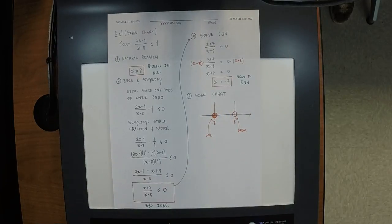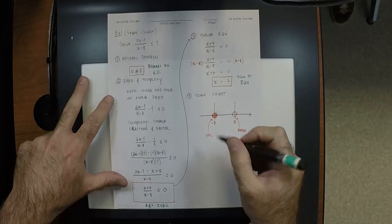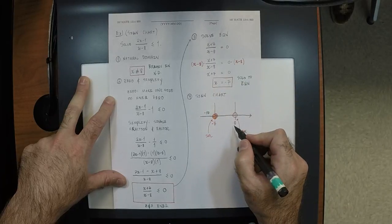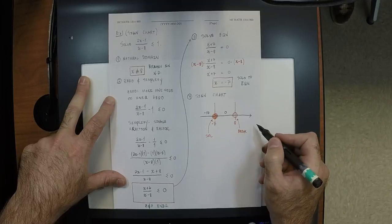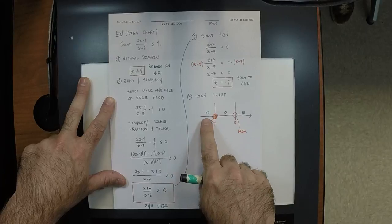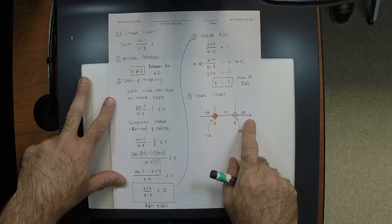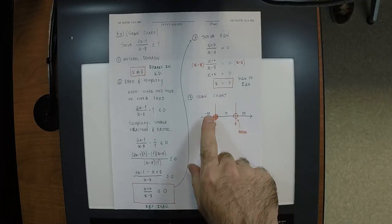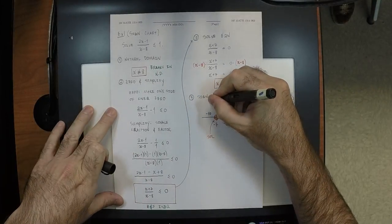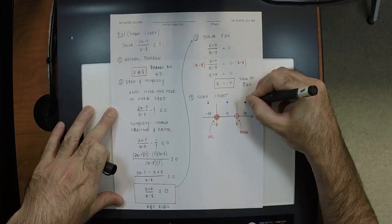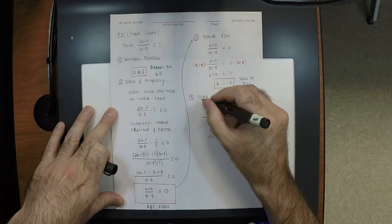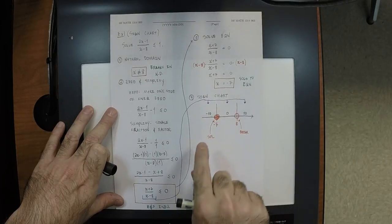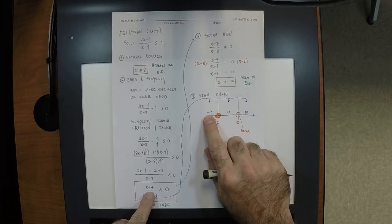For each region, we want to select a test point. What's a point to the left of negative 7? Negative 10. What's a point between negative 7 and 8? Zero. And what is a point to the right of 8? Ten. There's nothing sacred about -10, 0, and 10 — in the rightmost region we could have selected ten million. Now we're going to take these test points and evaluate them into the left-hand side of the zeroed and simplified inequality.